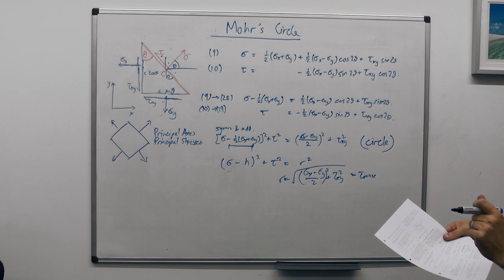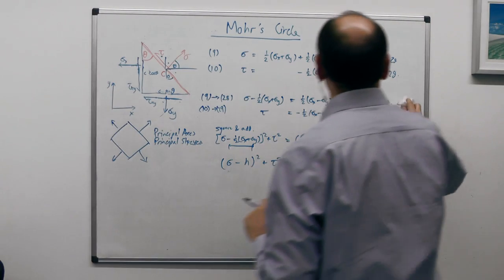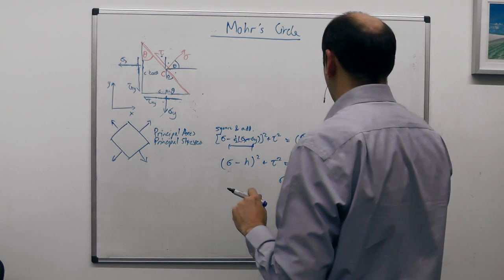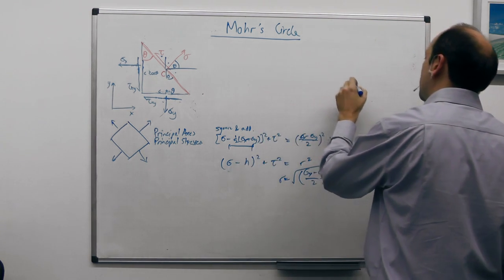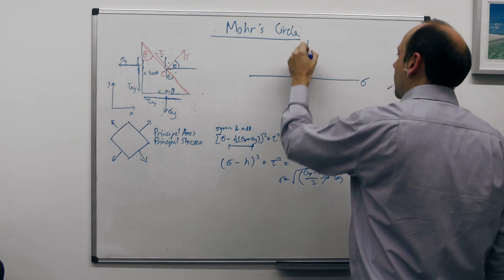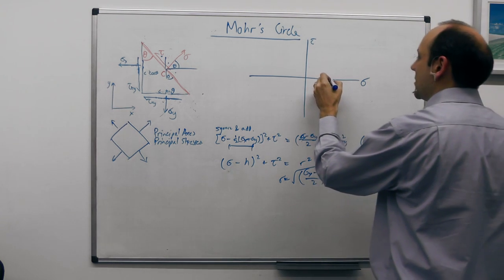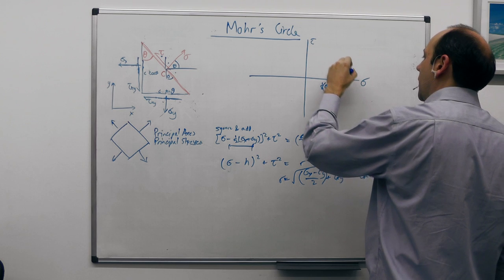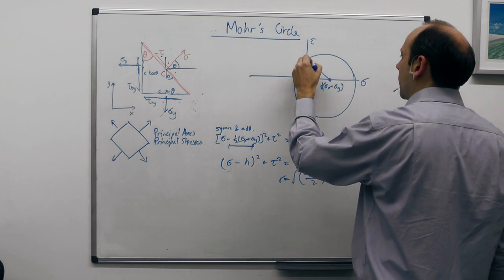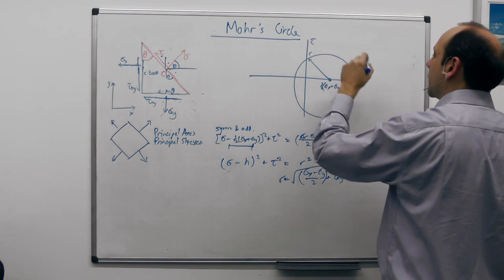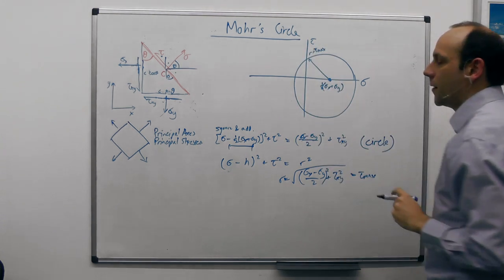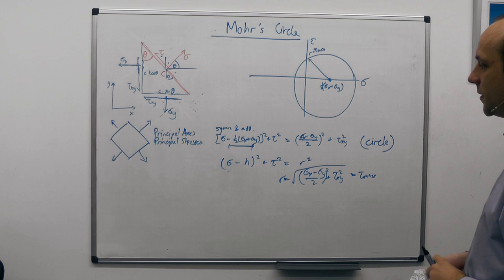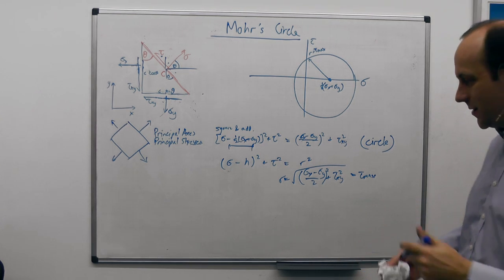If we draw a circle whose axes are sigma and τ, its centre will be at a half (sigma_x + sigma_y) and its radius will be equal to τ_max. That's called Mohr's Circle, and it's a way of drawing out a stress state that enables us to find the shear stresses. Let's look at how we use it — it's actually very simple.